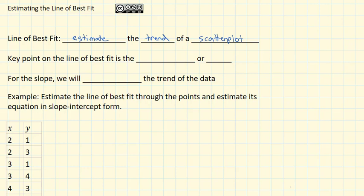And the key point on the line of best fit that we're going to use to draw it is the centroid, or that x bar, y bar point that goes through the average of the x's and the average of the y's.